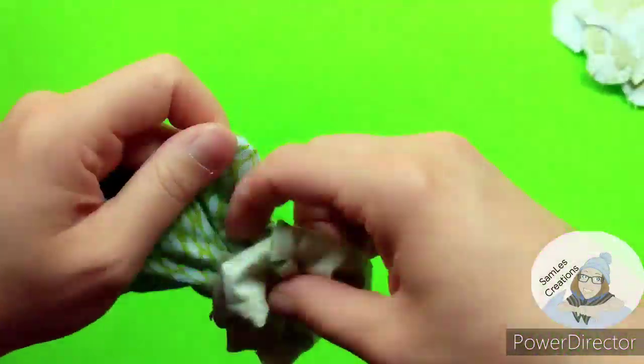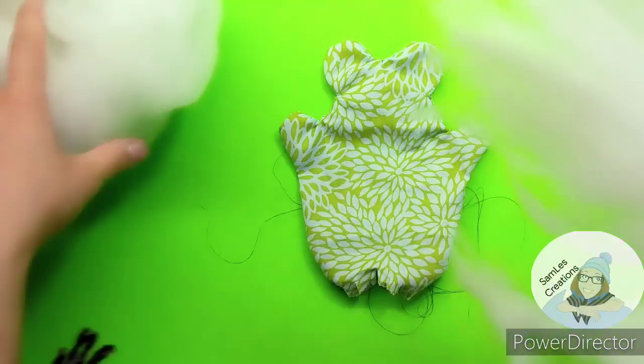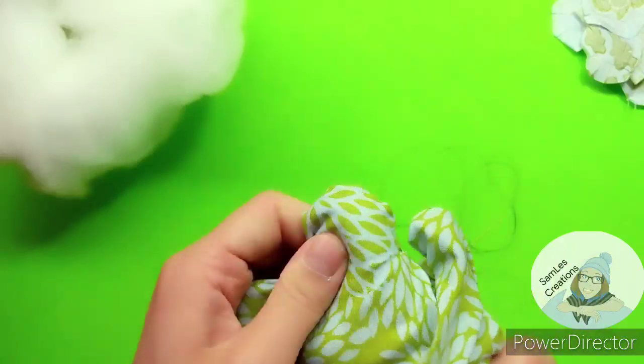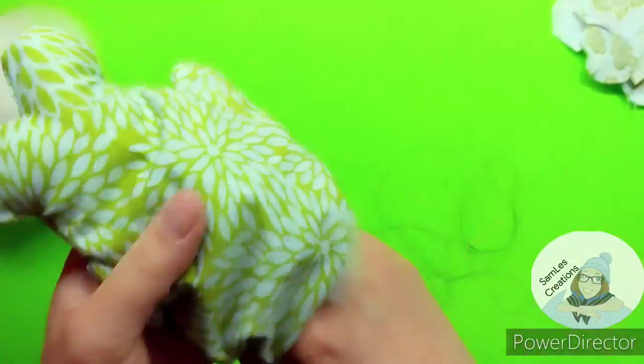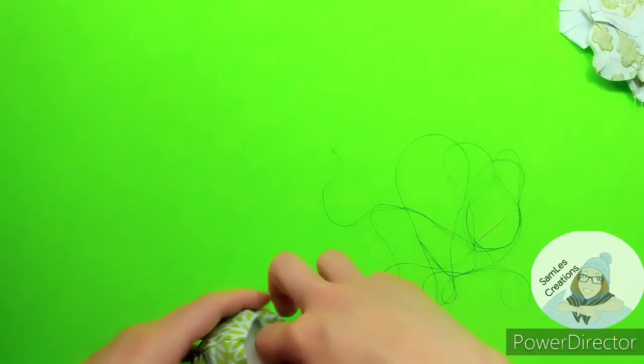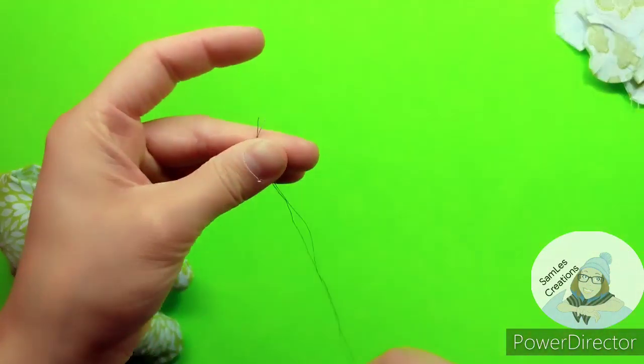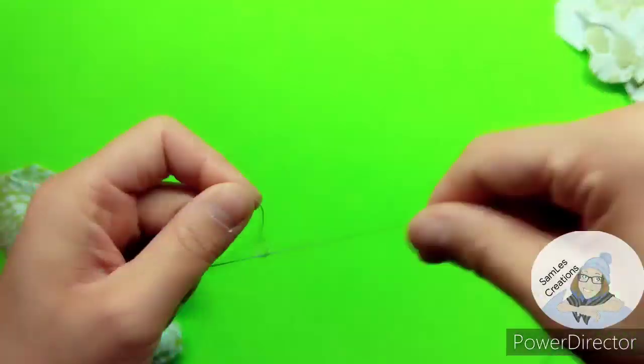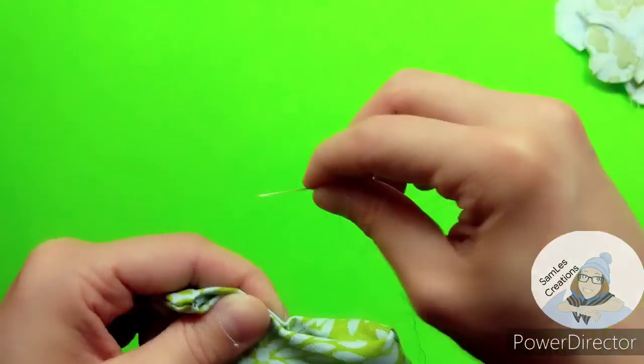When you stuff your stuffed animal, stuff all the limbs separately. That way the stuffing isn't getting pulled into the center like it was with mine, because I just did giant chunks. And when you're stuffing something, remember that you're gonna need a lot more stuffing than you think you will.